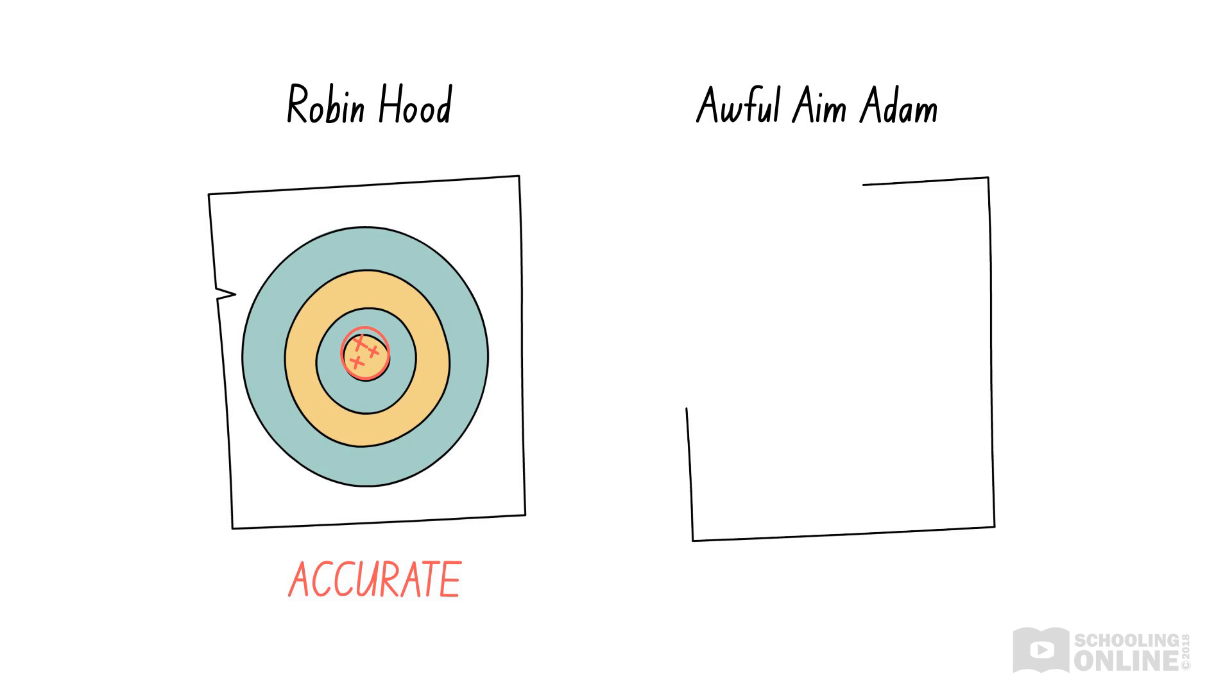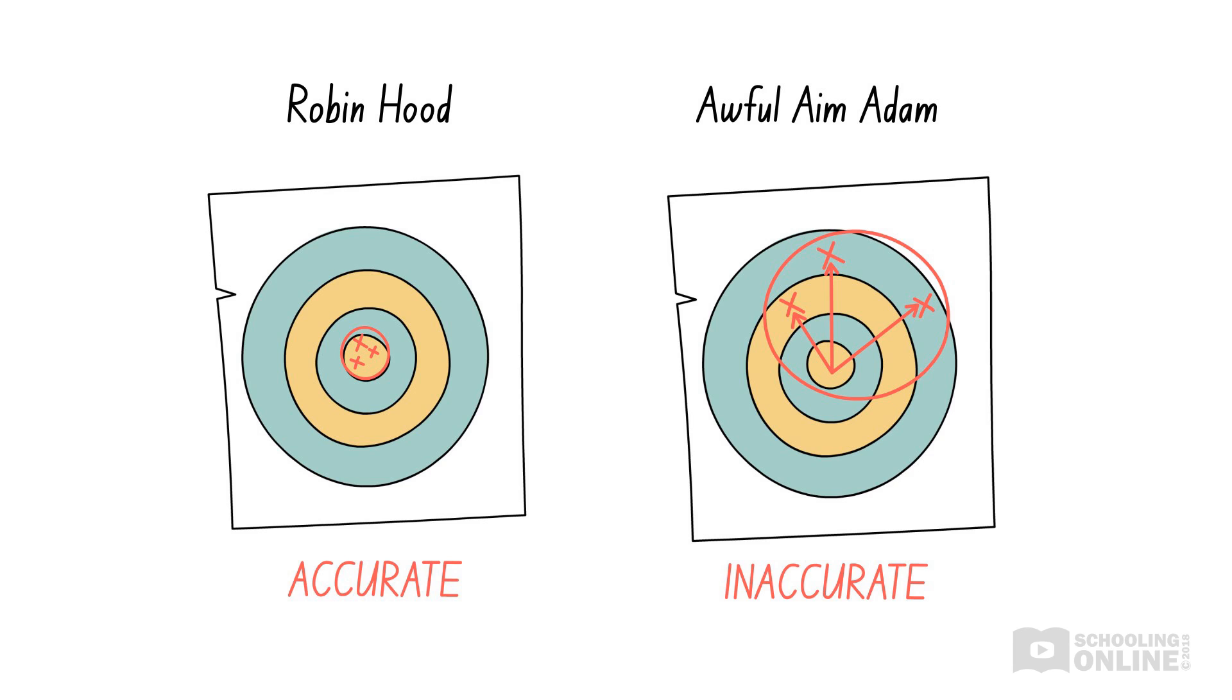On the contrary, if we are inaccurate, like Awful Aim Adam, then our experimental values will be, overall, far away from the true value. Usually, we perform each step of our experimental method exactly as it's written down. Even so, our data can still be inaccurate. Why is that the case?